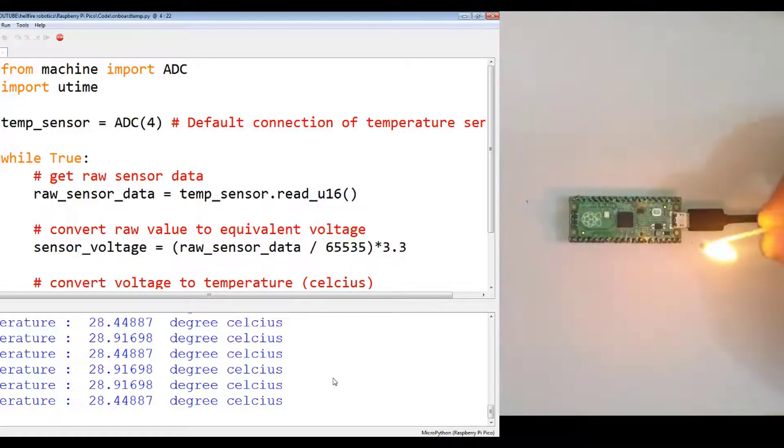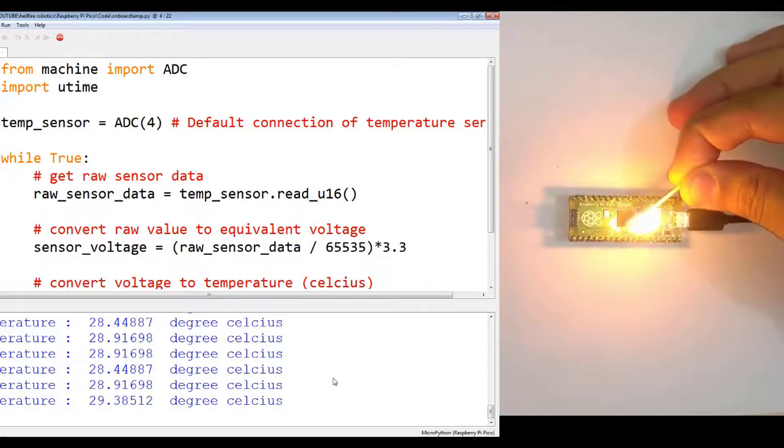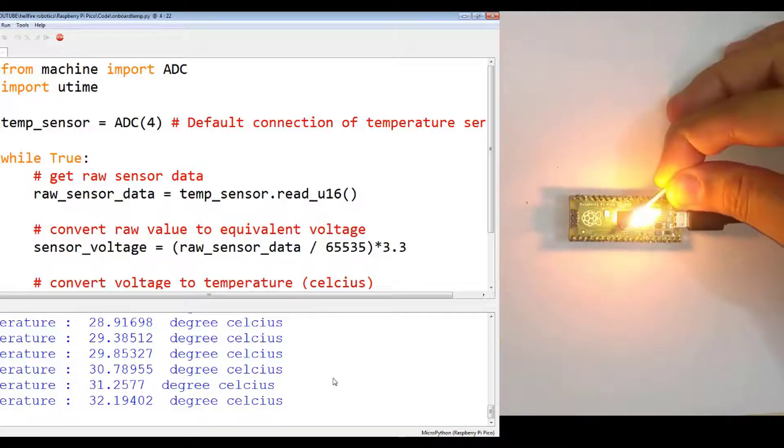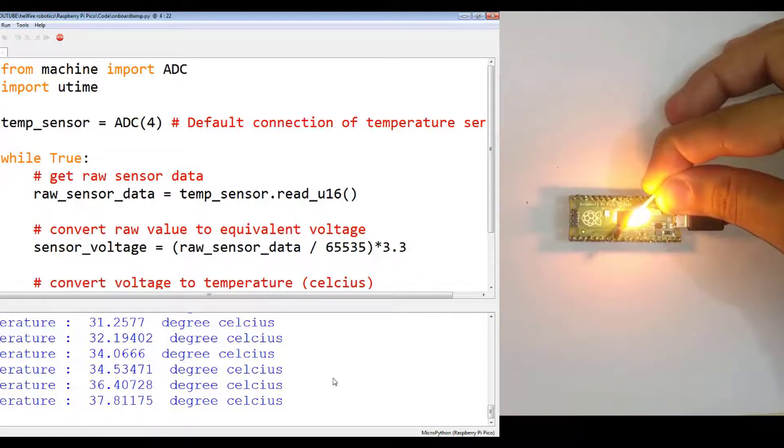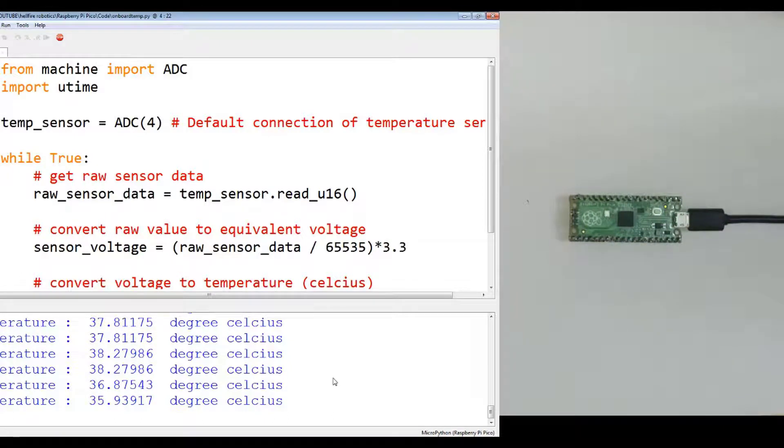Let me just put this and now notice the increase in the reading: 30, 31, 32, 34, 36, 37, 38. And now when I have removed the heat the temperature is falling.